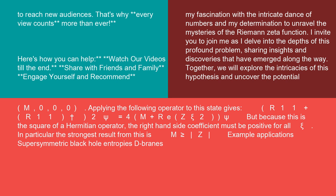Applying the following operator to this state gives: (R_{1,1}^† + R_{1,1})^2 |psi⟩ = 4(m + Re Z)|psi|^2. But because this is the square of a Hermitian operator, the right-hand side coefficient must be positive for all psi. In particular, the strongest result from this is m ≥ |Z|.